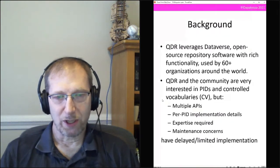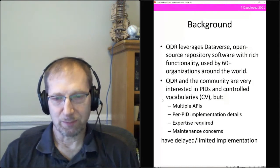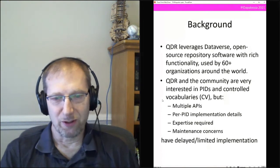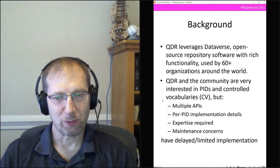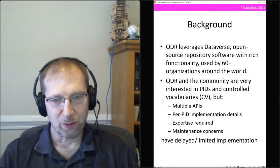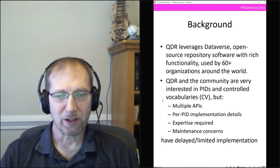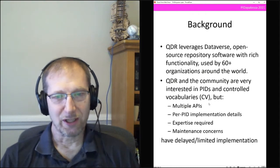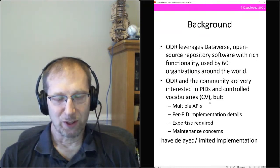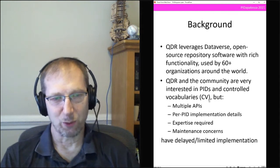There's fairly limited support for PIDs in Dataverse at the moment, and it's a common problem — not just Dataverse. There are multiple APIs, per-PID implementation details, questions about what metadata you can get, best practices for displaying them, and how to get people to input them. It requires expertise both in the PID itself and in the software you're working with, plus maintenance and usability concerns — what if these PIDs go down?